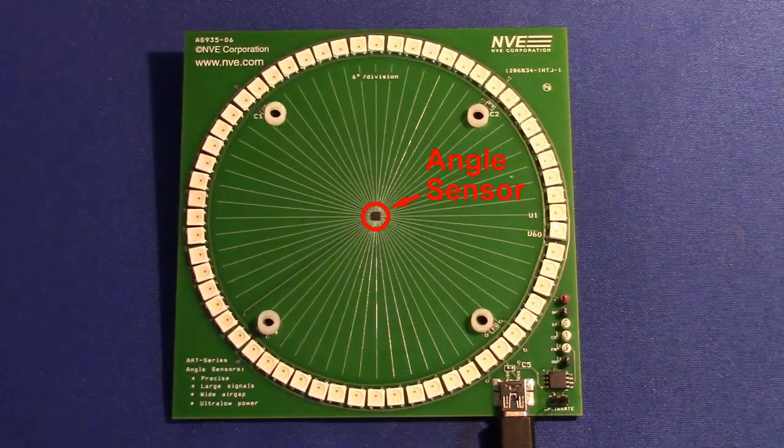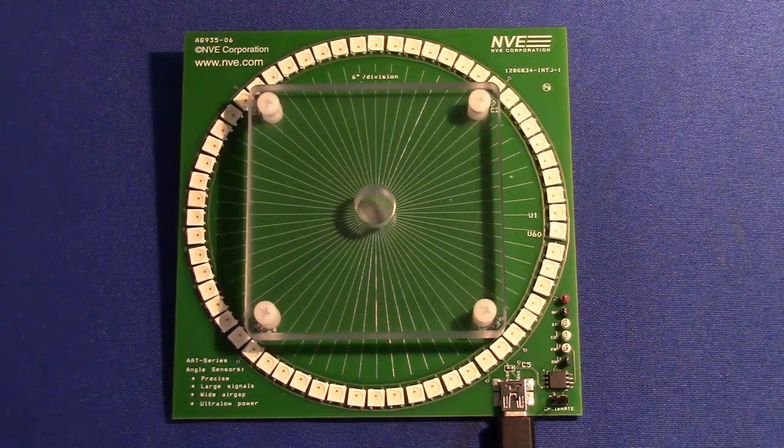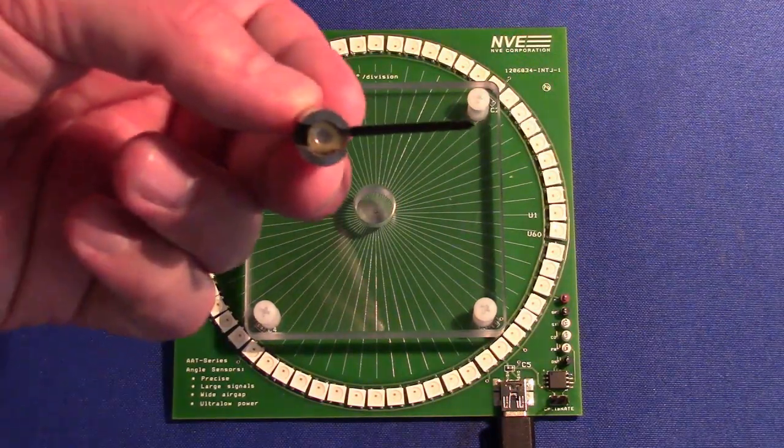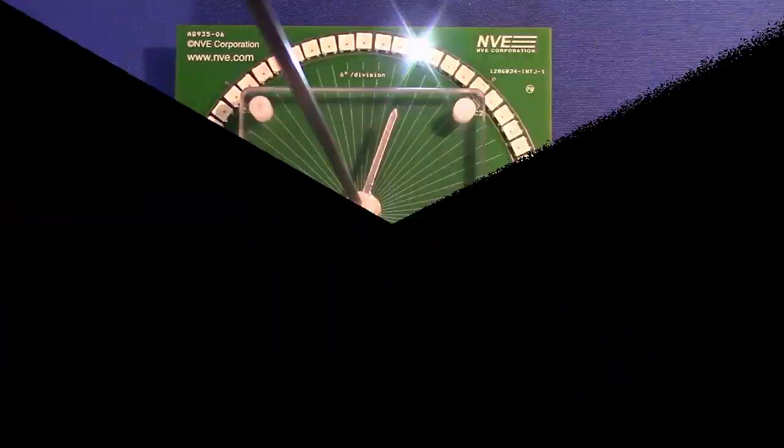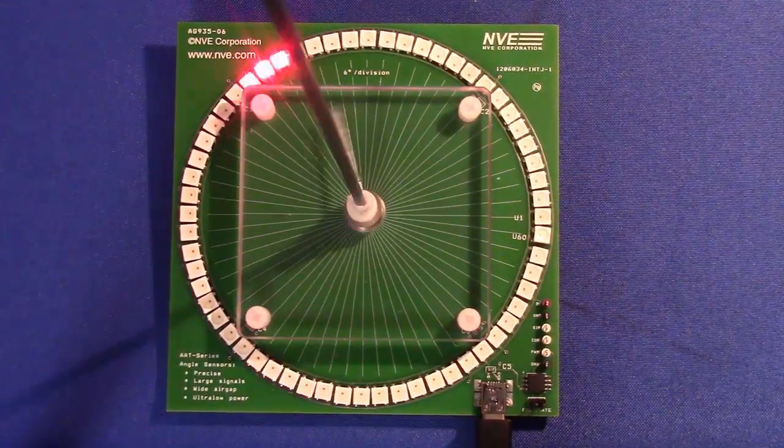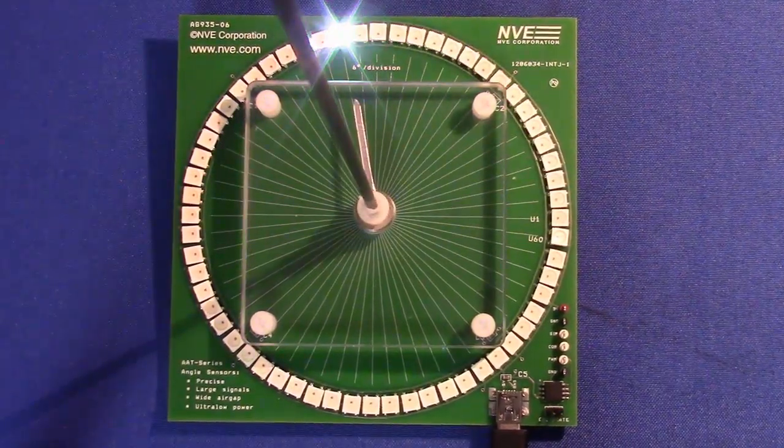There's an AAT angle sensor in the center of the board. We have a split-pole magnet. As we turn the magnet, the LEDs follow their rotation: red for clockwise, green for counterclockwise, and white for stopped.